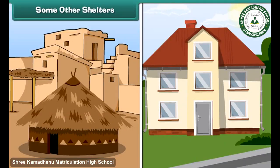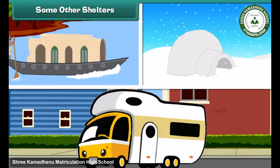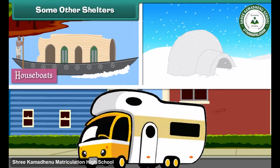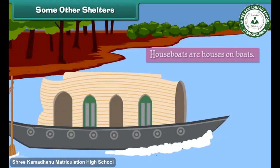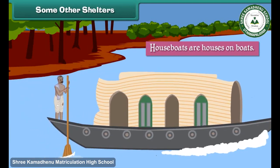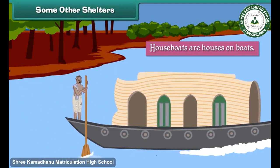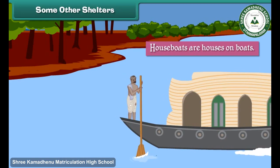Apart from kacha and pakka houses, there are some other forms of shelter. They are houseboats, igloos, and caravans. Houseboats are houses on boats. They float on water. They are found in Kerala, Kashmir, etc.